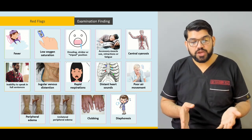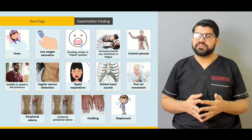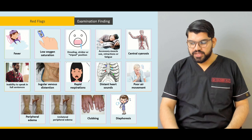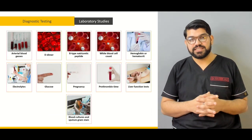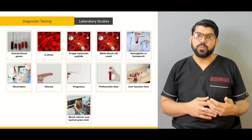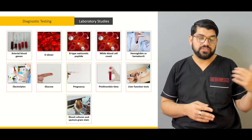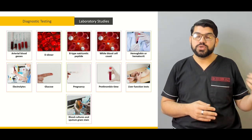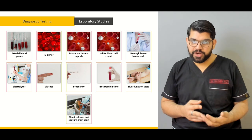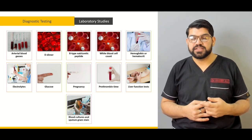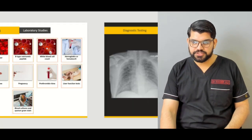What the differential diagnoses are and what examination findings are related to those differential diagnoses will be covered. Next, some diagnostic studies — diagnostic testing which includes arterial blood gases and D-dimers — ranging from blood studies to radiological studies that are required to help make the diagnosis and determine what might be causing shortness of breath.